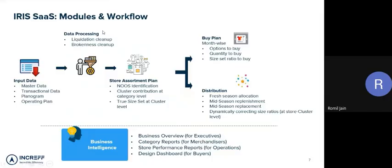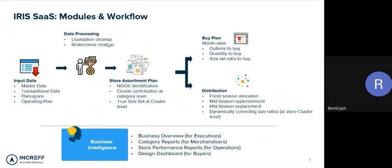The first step is liquidation cleanup. What this essentially means is that for some styles or products you might have given a relatively excessive discount, and all you are doing is recovering your working capital. Our software intelligently finds out your liquidation line items and removes them from the data. Once we have this clean data, we can work on the next steps.